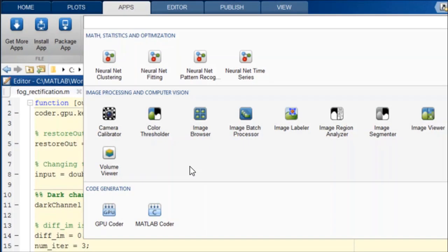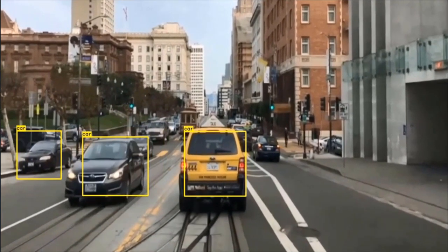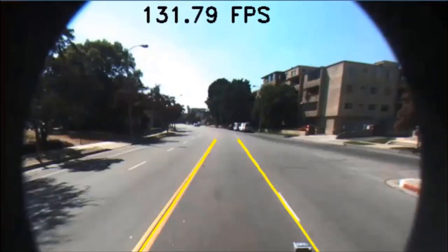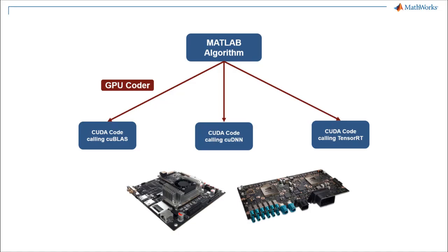GPU Coder lets you generate optimized CUDA from MATLAB for embedded vision applications, including deep learning. The generated code calls optimized NVIDIA CUDA libraries, including cuFFT, cuBLAS, cuDNN, and TensorRT, and can be used for prototyping on GPUs like the NVIDIA Jetson and Drive platforms.